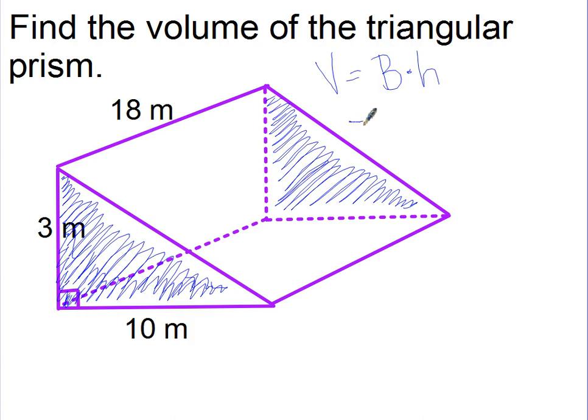Our base is a triangle which has one half base times height. In this case we'll call the base 10 - it's what it's sitting on here. So the triangle has a base of 10, and the triangle itself has a height.